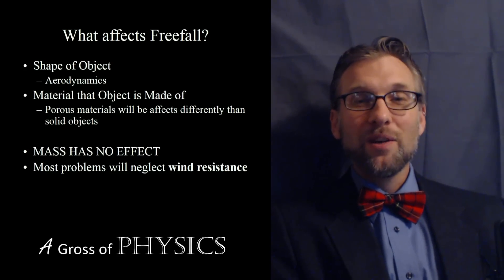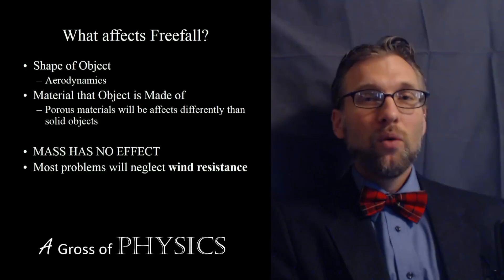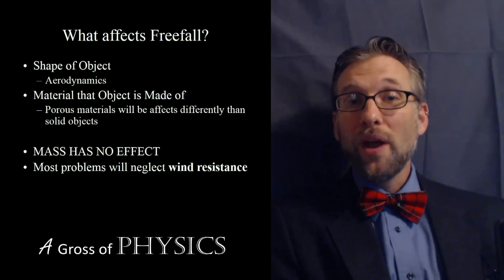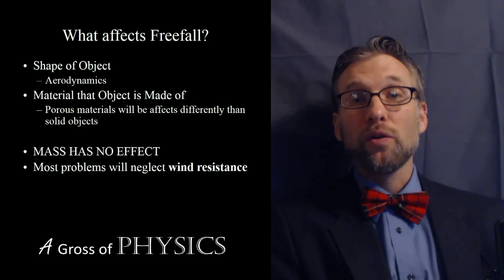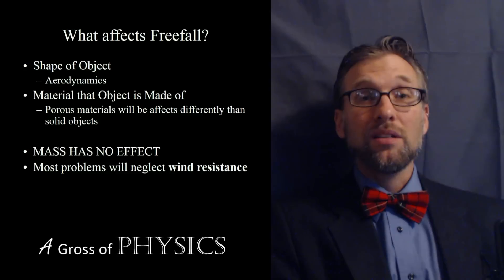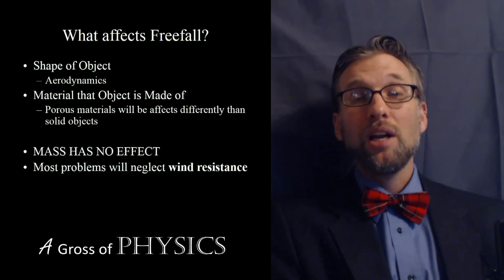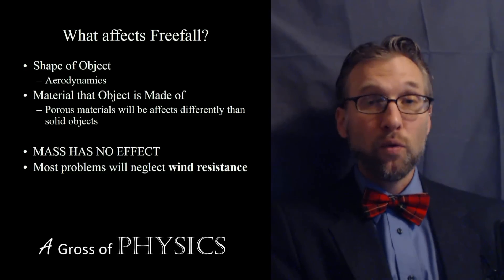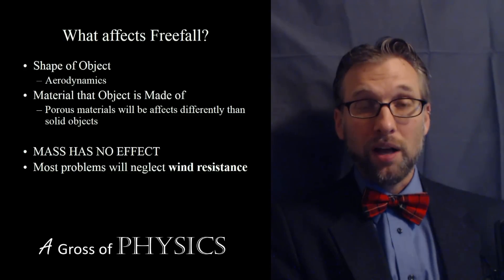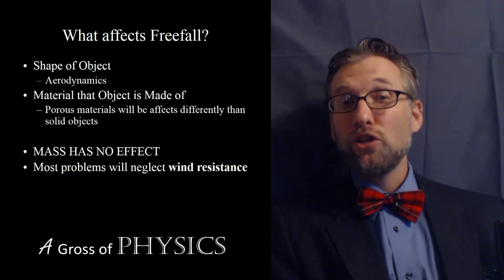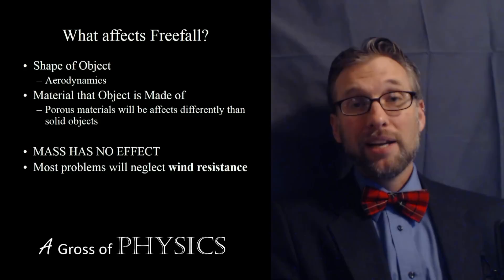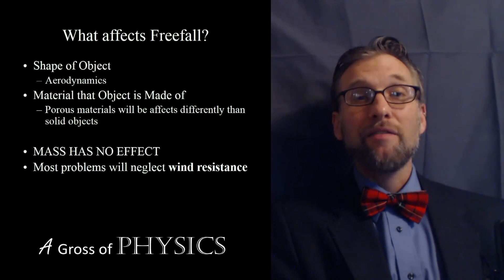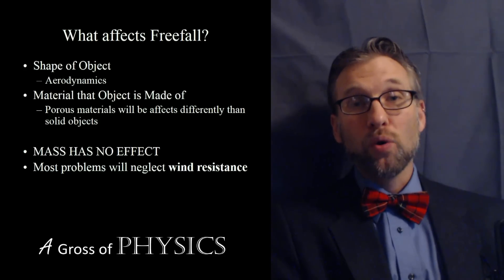When we drop an object near the Earth's surface that has good aerodynamics, the net force will typically be the force of gravity. Mass is the amount of stuff that makes up the object. Weight, on the other hand, is the pull of the Earth on the object. In order to find the force of gravity, we multiply the mass of the object times the acceleration of gravity. The mass is constant no matter what, but for this course we're going to stick to objects that do not have maximum drag and cut through the air aerodynamically.